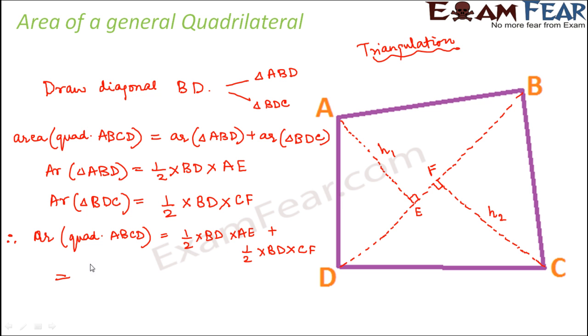If you compare these two terms, you see that half into BD is common, and then inside the bracket you have AE plus CF. This can be written as half into BD. BD is the diagonal, AE is H1, and CF is H2.